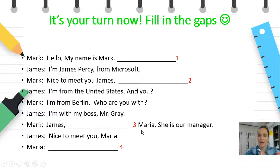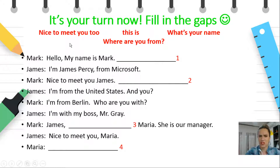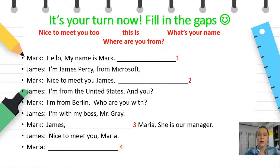James — blank — Maria. She's our manager. Nice to meet you, Maria. And now we have a blank space. Now look at the sentences: Nice to meet you too. This is... What's your name? Where are you from? You have to fill in the four gaps with these expressions and questions. I think you already know the answers, but I'm going to give you several seconds to think about them and then we'll work together.